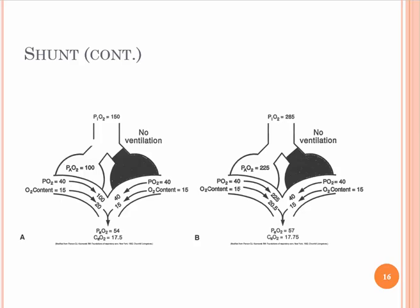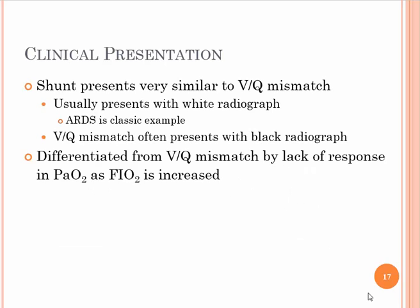So that's when you think it's a shunt — any time you have a shunt, extra oxygen doesn't help; you have to add pressure. The clinical presentation is very similar to the VQ mismatch patient, with those nonspecific signs of tachycardia and tachypnea. However, in this instance the x-ray is usually white. ARDS is a classic example — an advanced case of ARDS produces what we call a 'white out' of the x-ray. The VQ mismatch, on the other hand, represents a black x-ray. A shunt is differentiated from VQ mismatch by lack of response in PaO2 as FiO2 is increased.